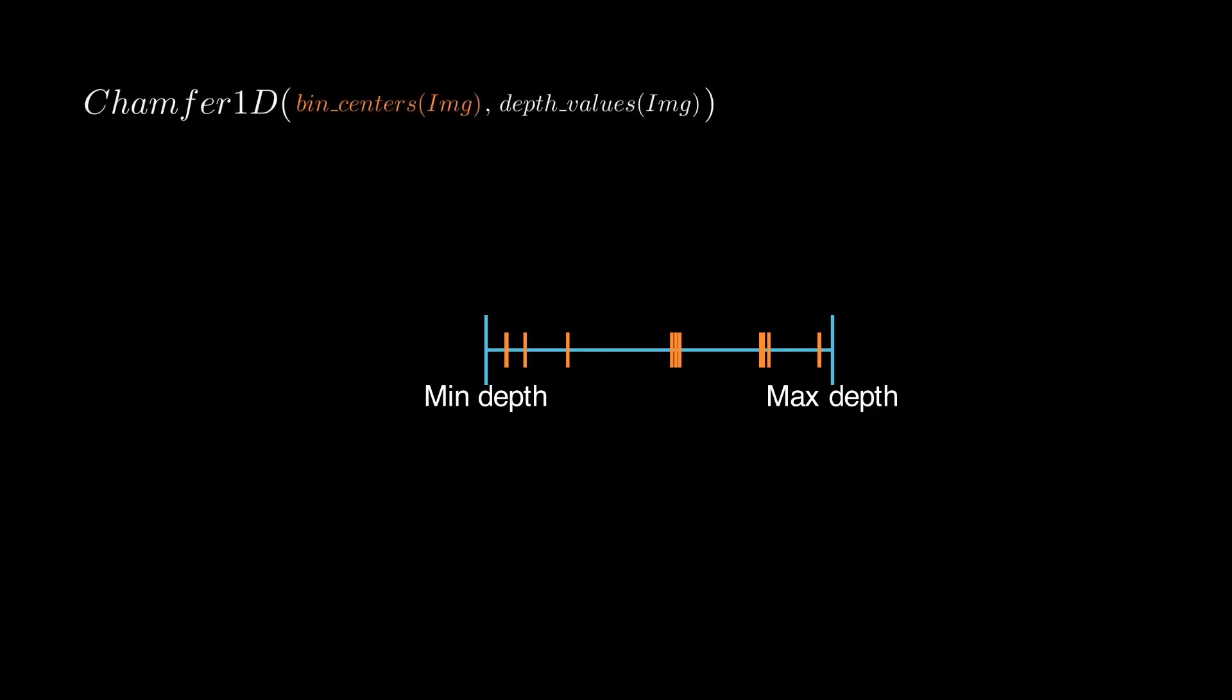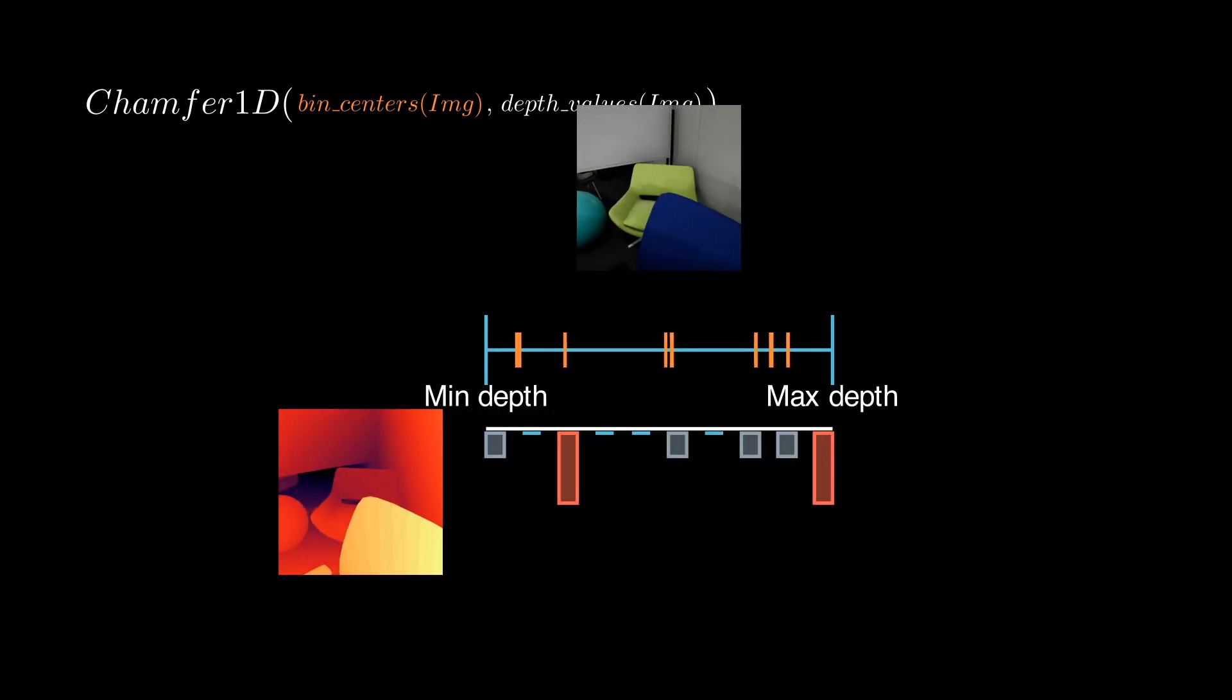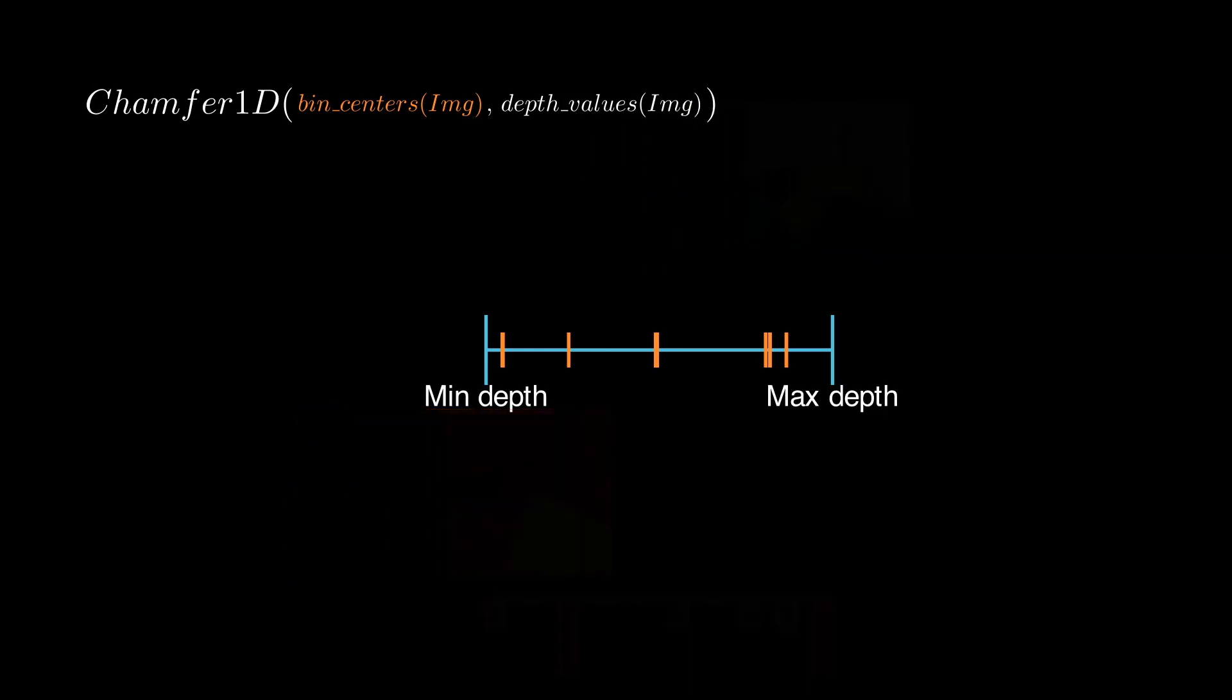During training, the distribution of the bin centers is made to match the distribution of the depth values in the input scene using chamfer distance.